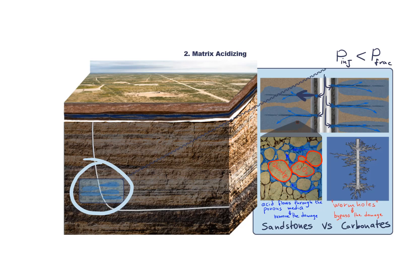In a carbonate formation our goal is to bypass the damaged zone. We do this by dissolving rock and creating channels called wormholes. To form these branches and channels we have to choose the right acid and injection rate. Ultimately we want to extend these wormholes from perforations beyond the near wellbore zone, creating a conductive pathway for hydrocarbons to flow through.